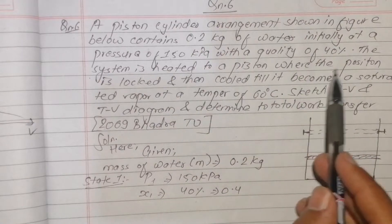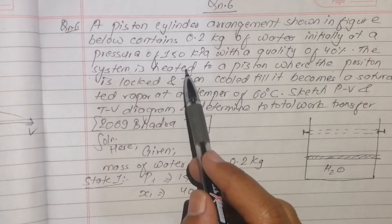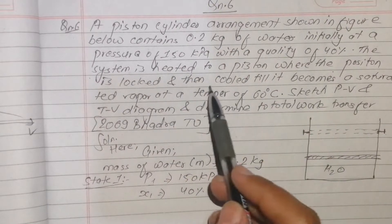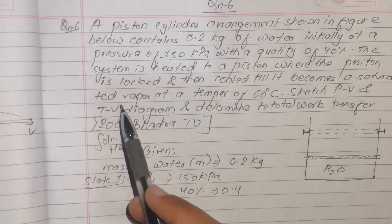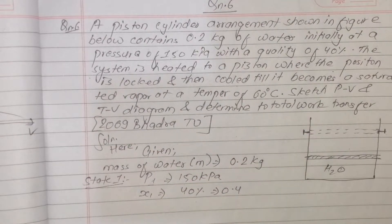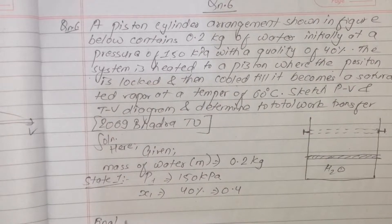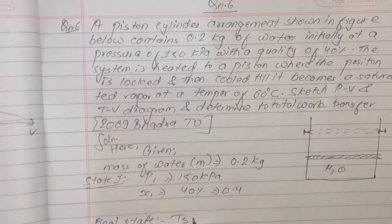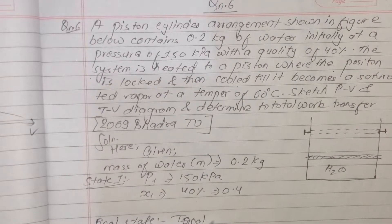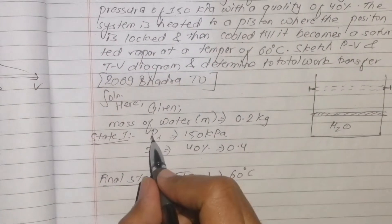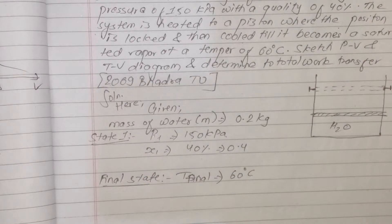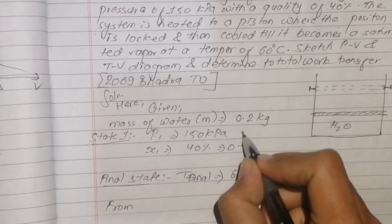The system is heated to a piston where the piston is locked and then cooled. The system is heated to a piston where the piston is connected from the surface state.